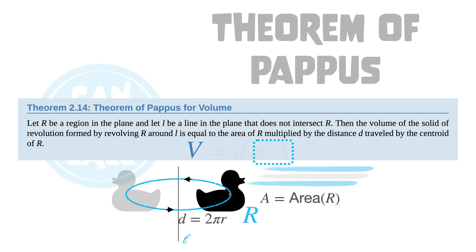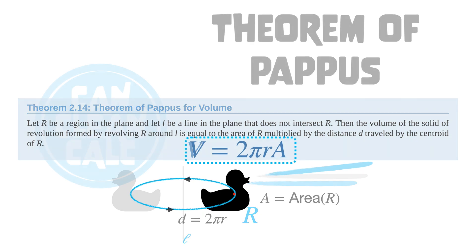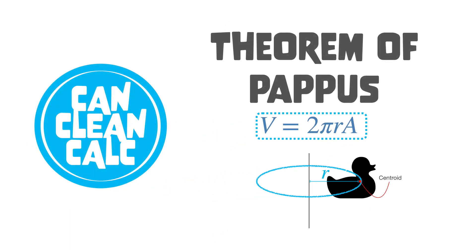Plugging that in, we can write volume V by the theorem of Pappus is V = 2πrA, recalling that r is the distance of the centroid to the axis of rotation.